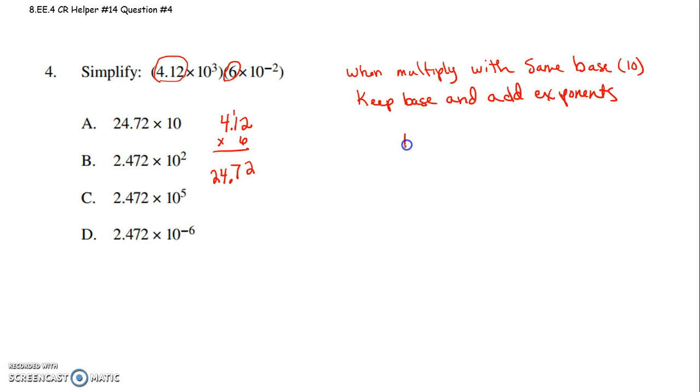So then we have, if you have 10 to the third times 10 to the negative 2, we're going to keep our base of 10, and we're going to add our exponents. 3 plus negative 2. 3 plus negative 2 is 1, so that's 10 to the first power.